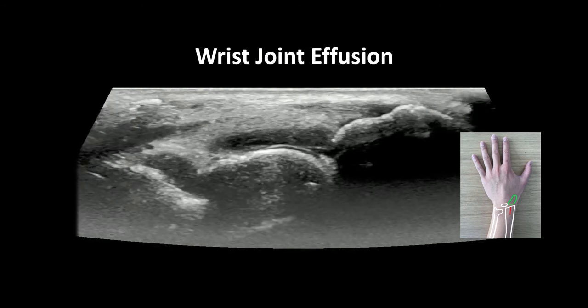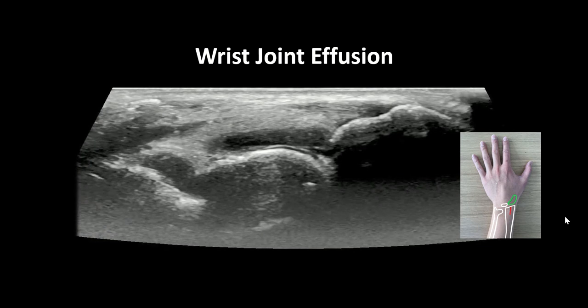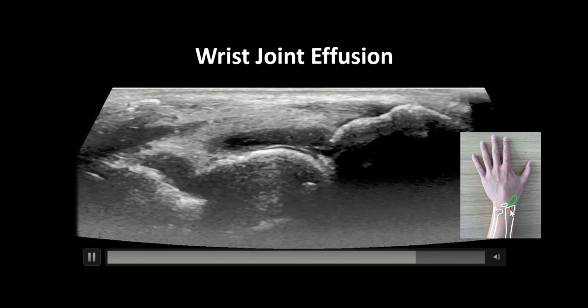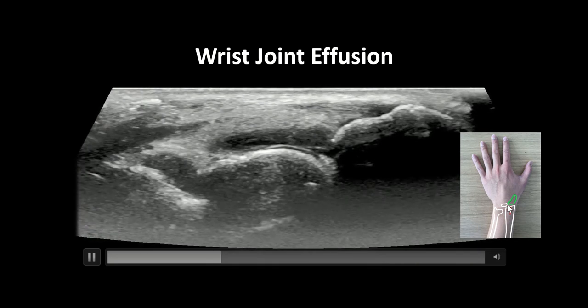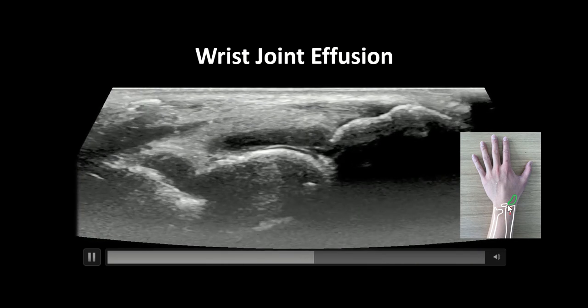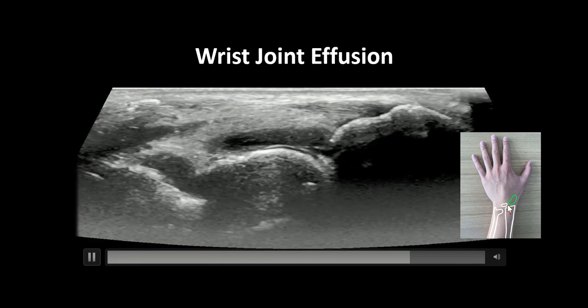A linear probe is placed in the longitudinal axis between the distal radius, seen here in red, and the scaphoid, seen here in green, with the probe marker oriented distally.